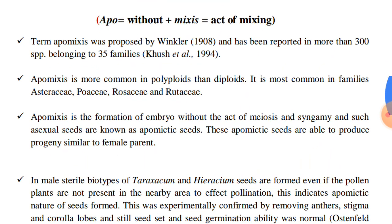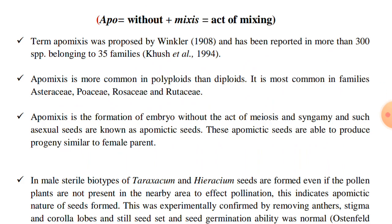This term apomyxis was coined by Winkler in 1908 and has been reported in more than 300 species belonging to 35 families. It is more common in polyploids than diploids. The most common families where apomyxis has been reported are Asteraceae, Poaceae, Rosaceae, and Rutaceae.